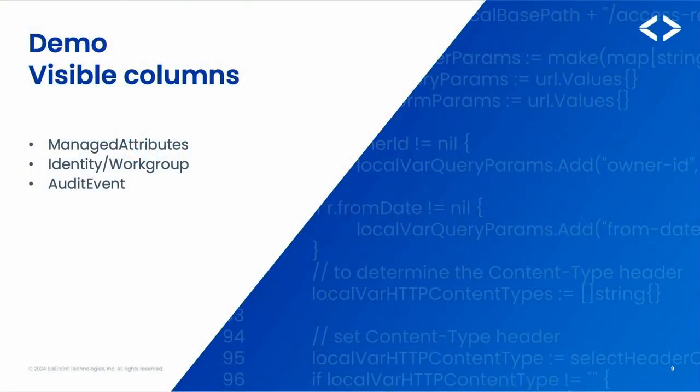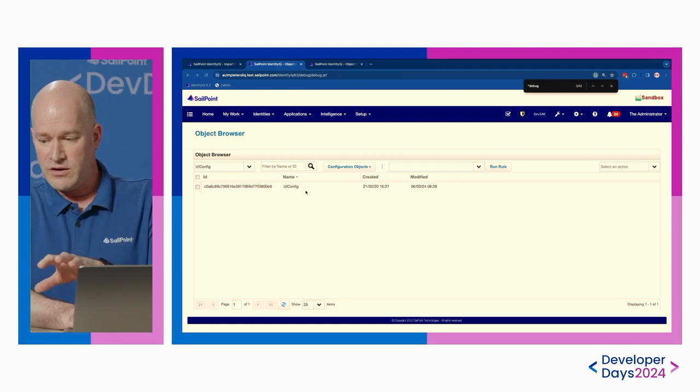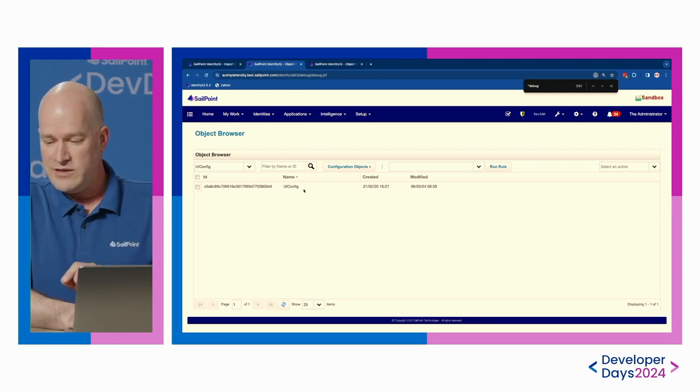So how can we fix this? How can we make the debug interface work better? In the demo I'm going to show you, I'll introduce managed attributes and how we can extend them, identities and work groups, and audit events — how we can make the interface more useful. All of this can be configured via the debug interface using the UI config object. Switching to my demo environment now.